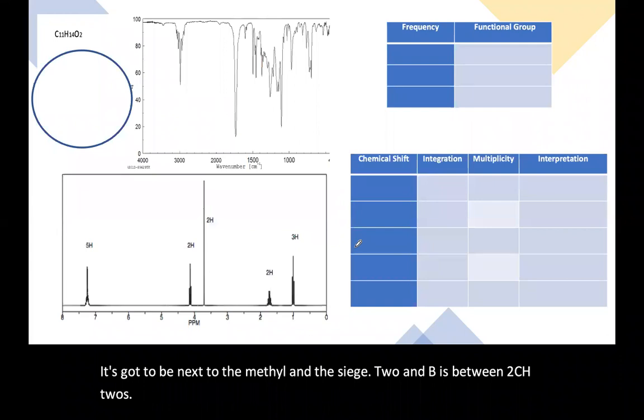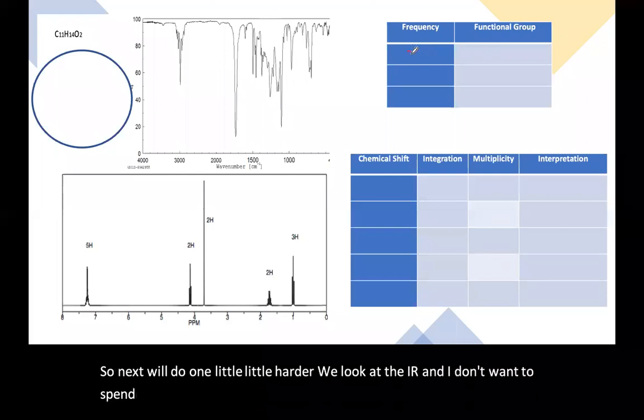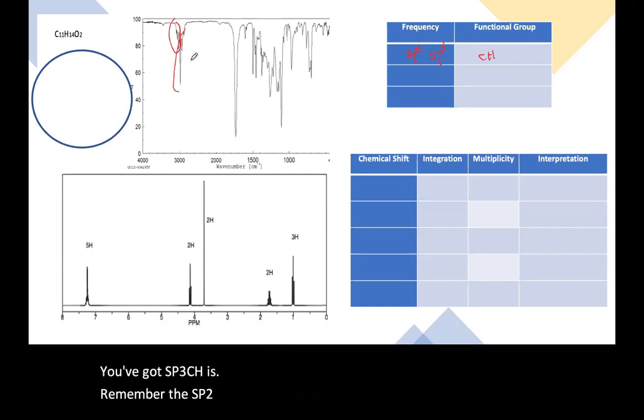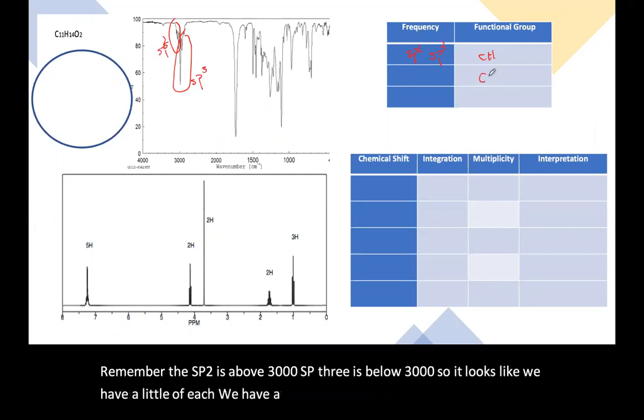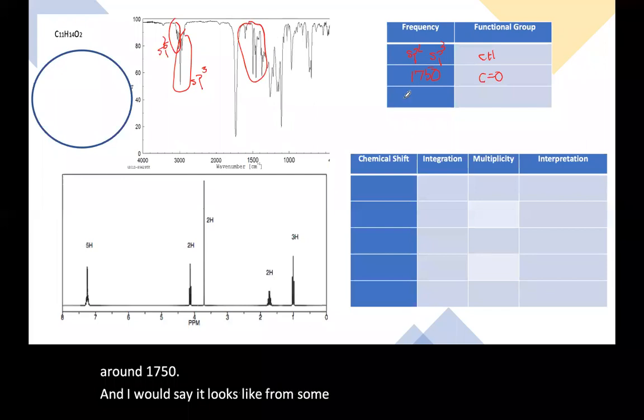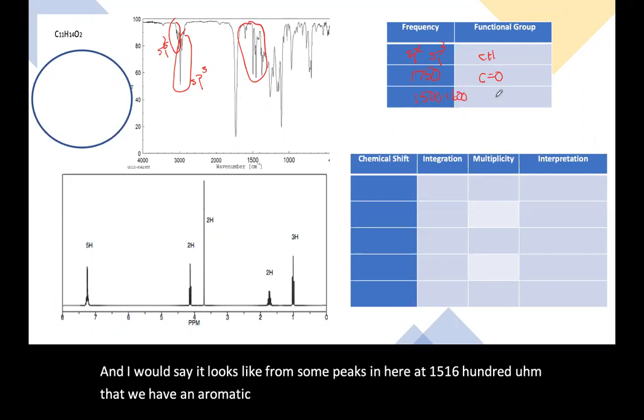So next we'll do one that's a little harder. We look at the IR and I don't want to spend too much time. But I want you to remember you've got SP2, you've got SP3 CHs. Remember that SP2 is above 3000. SP3 is below 3000. So it looks like we have a little of each. We have a carbonyl carbon double bond oxygen around 1750. And I'd say it looks like from some peaks in here at 15, 1600, that we have an aromatic ring, 15 to 1600 aromatic ring.